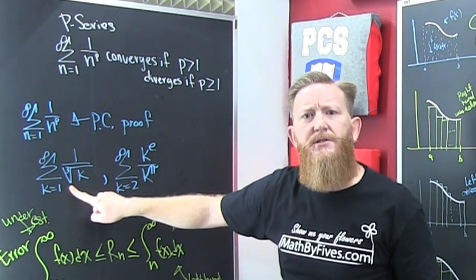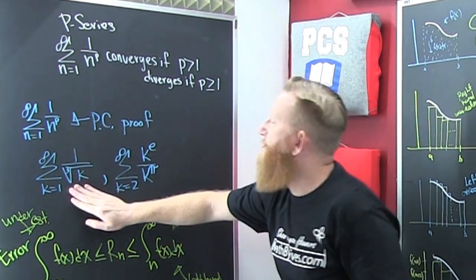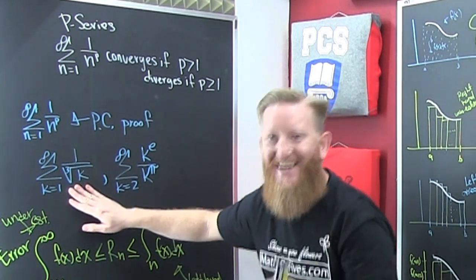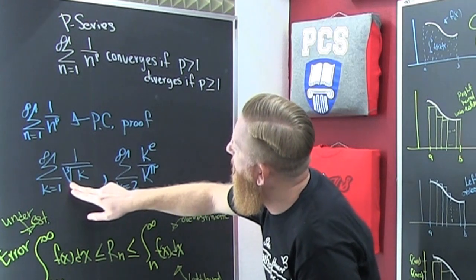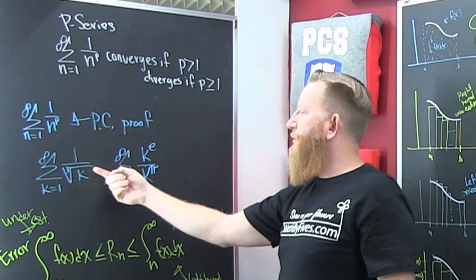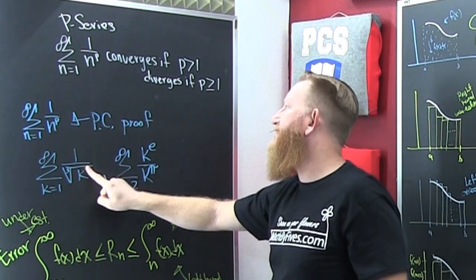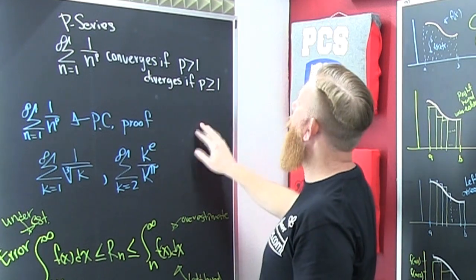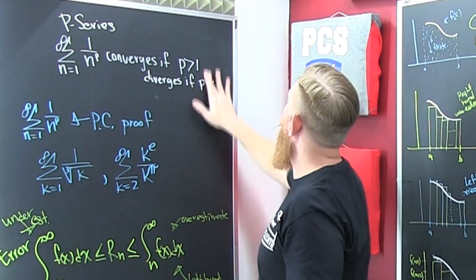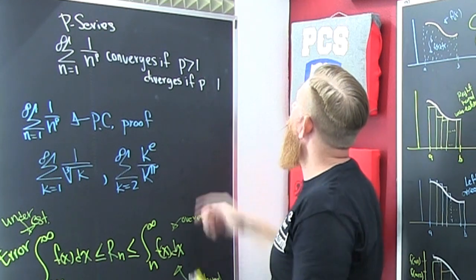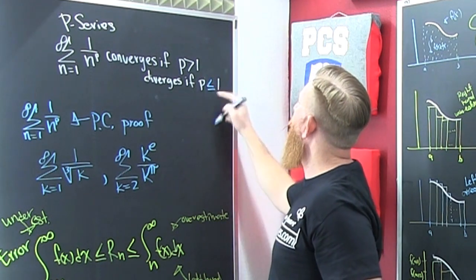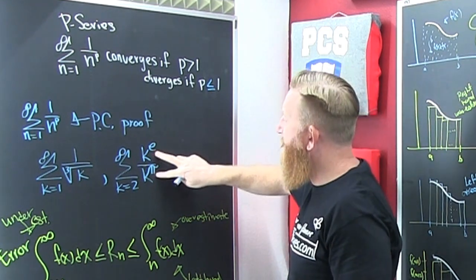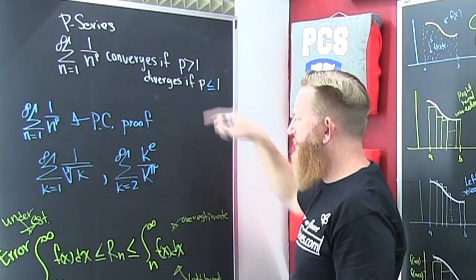These look like small things but they matter. You would rewrite the series using rational notation and compare the exponent with p. If p is greater than 1, the series converges; if p is less than or equal to 1, it diverges. That example is also in the Playlist Exclusive.